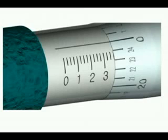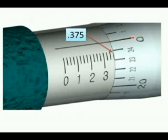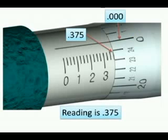Now let's look at a reading on here. This mark that you see there, that tells us that we're at 0.3, and then 0.325, 0.350, and 0.375. So that mark represents 0.375. The reading from the thimble scale is 0. So we don't add anything to the 0.375, and so the reading is 0.375.